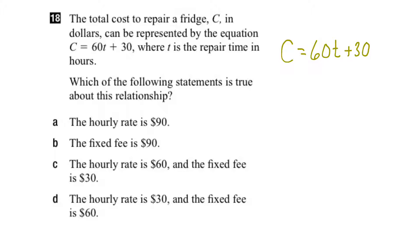We are also told that C is the total cost in dollars and T represents the time to repair the fridge in hours.